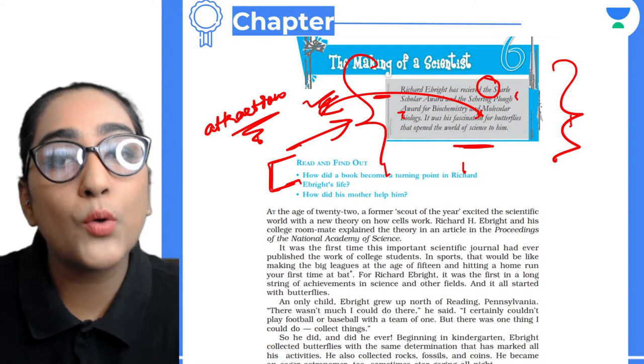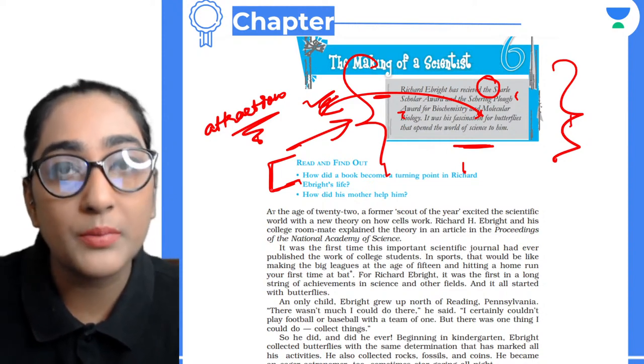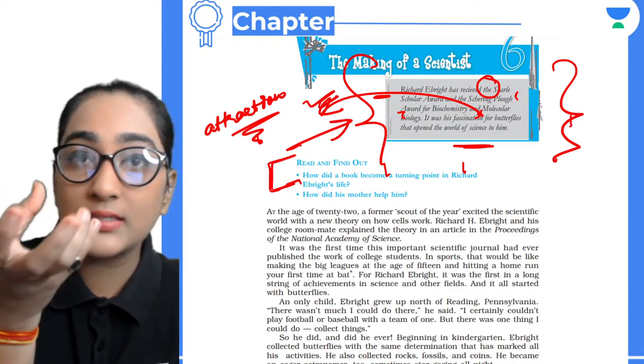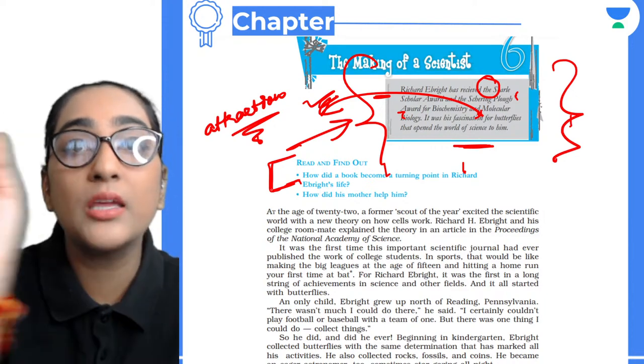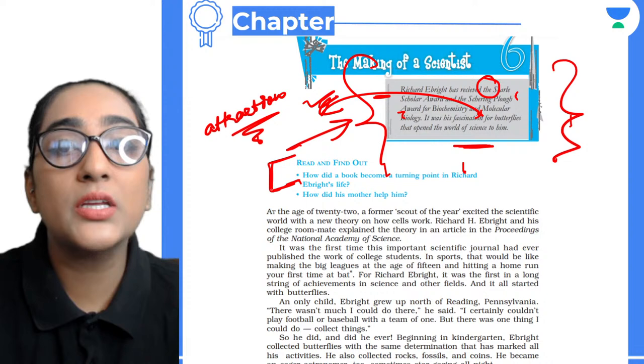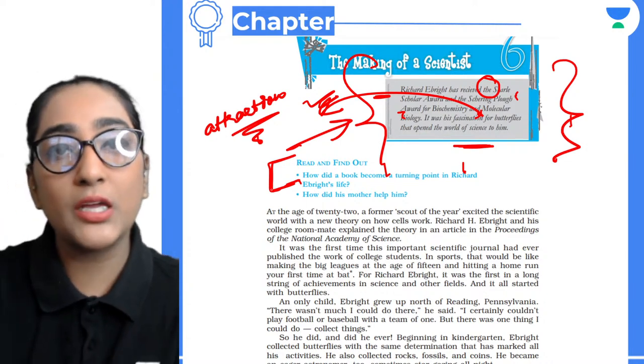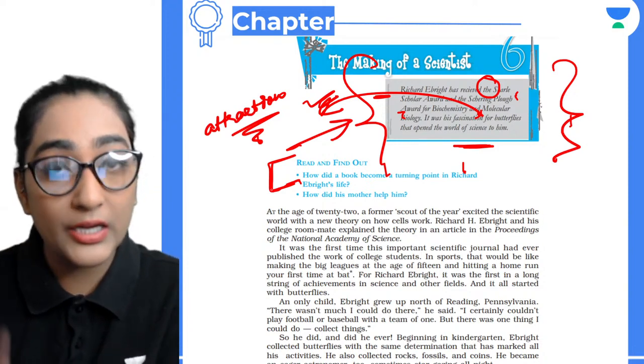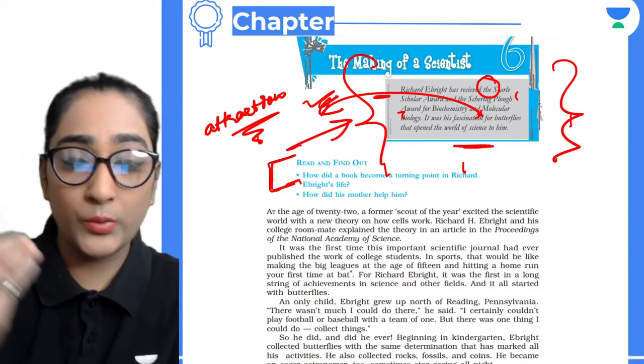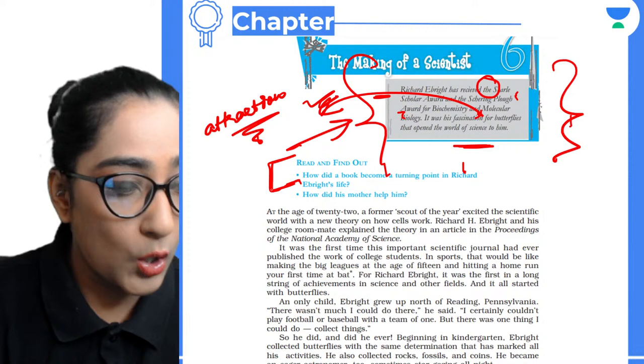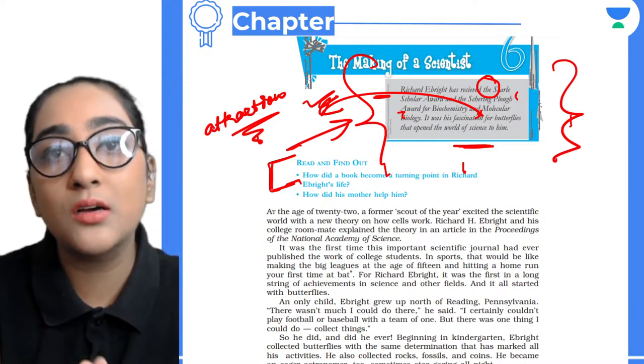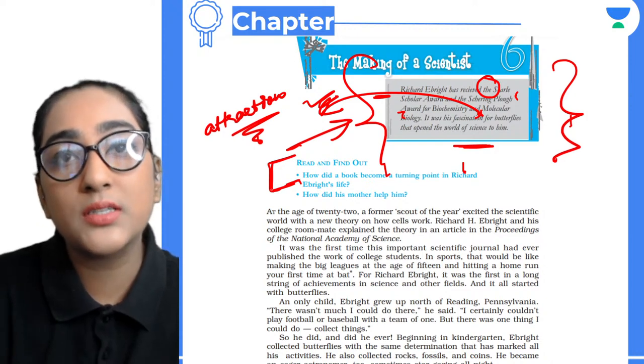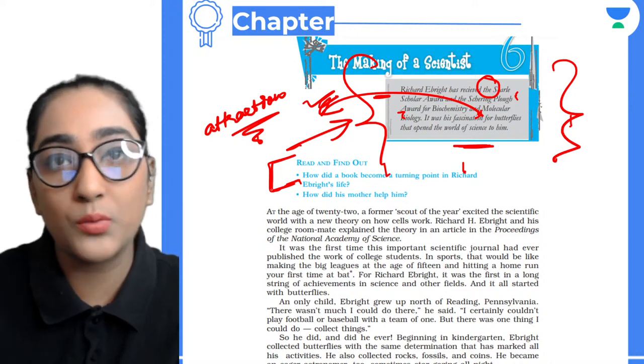There are certain questions given to us which we have to always look forward to. Question one is: How did a book become a turning point in Richard Ebright's life and how did his mother help him? These two questions - you have understood that there is going to be a turning point, a point that came in life which changed his life.